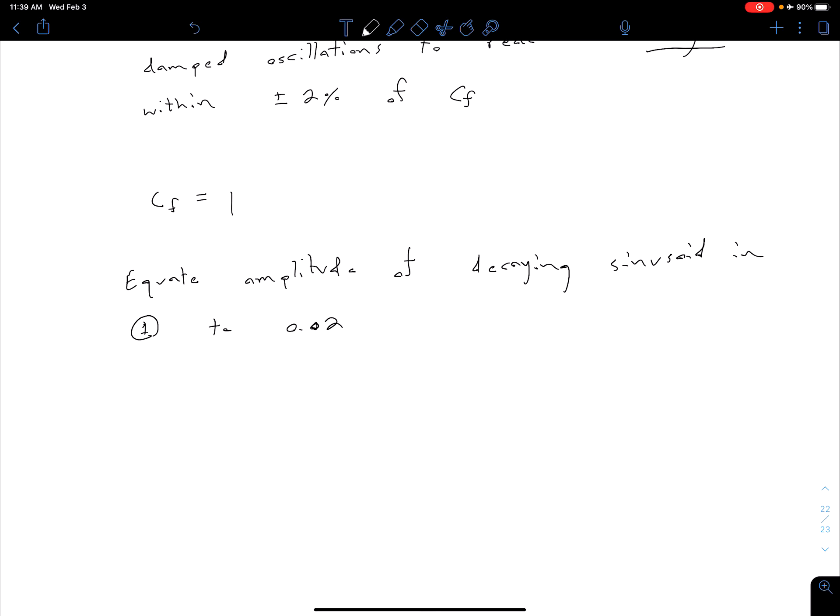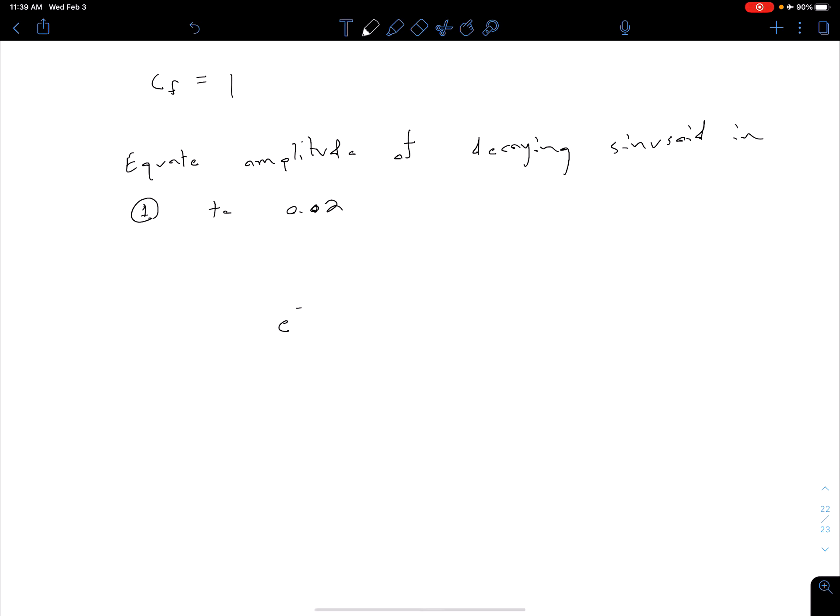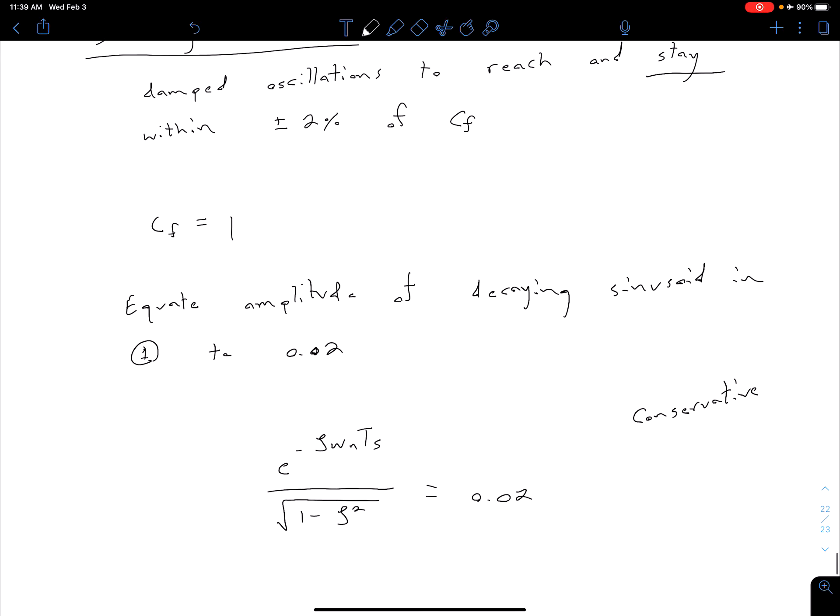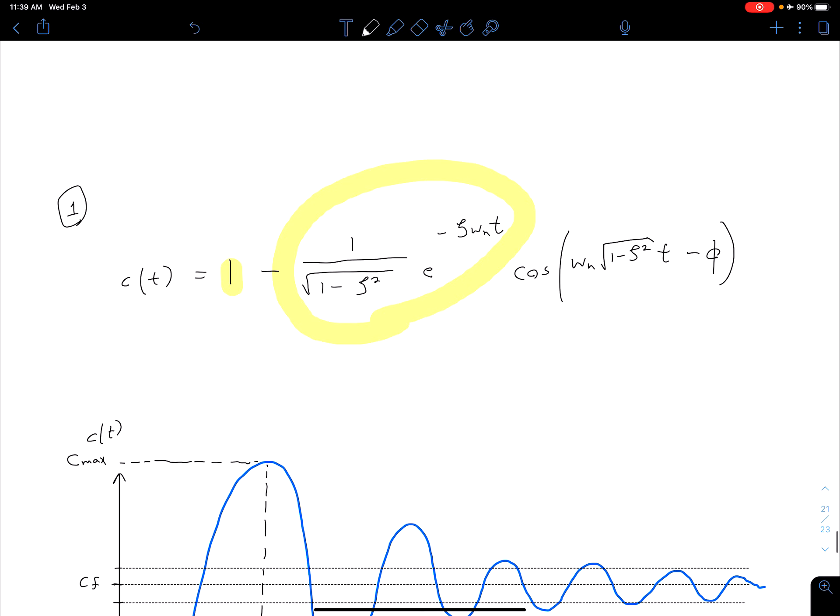And that's because we're talking about a 2% settling time. So what that looks like is we have E to the minus zeta omega n T S, because the time we're concerned with is now our settling time, so that's why I've substituted T S for T. And then we have that divided by 1 minus zeta squared, and we're setting that equal to 0.02. It should be mentioned too that this is also a conservative estimate because we're assuming that when this T S starts, we're assuming that this cosine term is at a maximum value of 1.